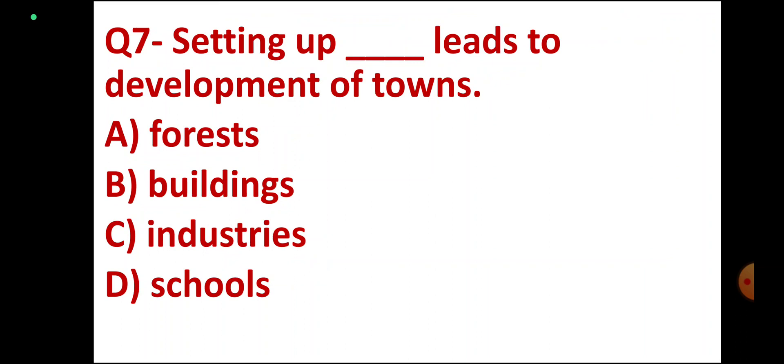Question number 7. Setting up DASH leads to development of towns. Options: Forests, Buildings, Industries, Schools. Correct answer: Industries. Option C. Correct.